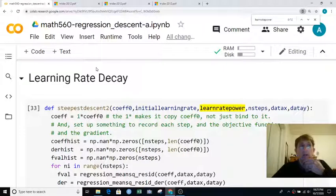Here's an idea that can help us give us a little more wiggle room in choosing a good initial learning rate: let the learning rate itself get smaller as we do more and more iterations.